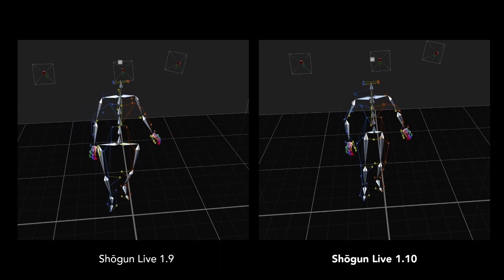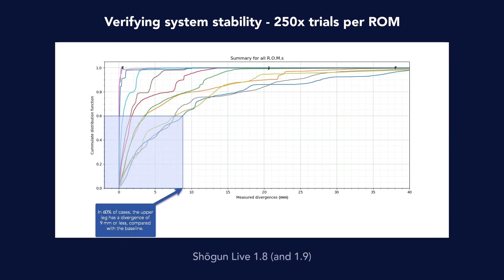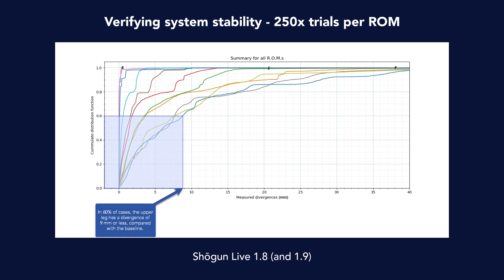So while this passes the eyeball test, what does it mean in terms of actual data, in terms of raw numbers? In validating these improvements, we ran experiments using 250 ROM trials to measure divergencies that occur across the various bone lengths. The graph seen on screen now contains lines for each bone and their divergencies across all ROMs in Shogun 1.8. In short, the closer the lines are to the left-hand axis, the less divergencies have occurred. For example, in 60% of the ROMs, the upper leg demonstrated a divergence of 9mm or less compared to the baseline.